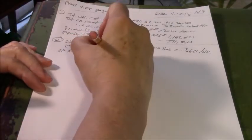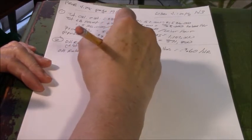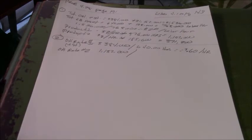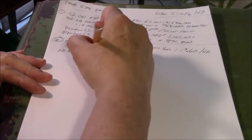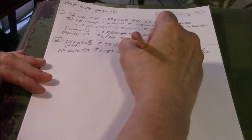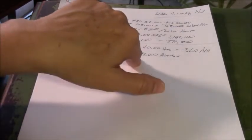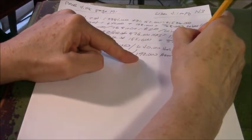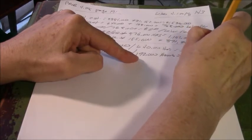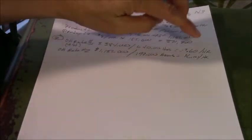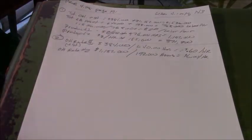And we believe the machine hours we are going to use is 192,000. So 1,152 divided by 192 is $6 per machine hour. So this is labor hour, this is machine hour. Department one, 60 cents per labor hour. Department two, $6 per machine hour.